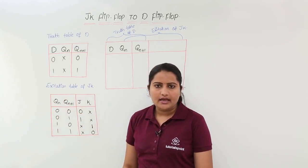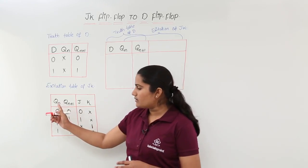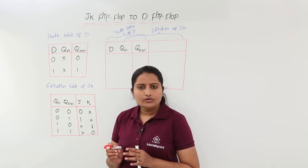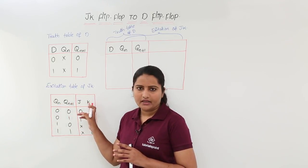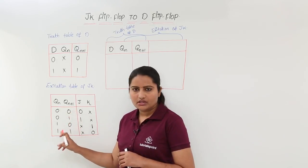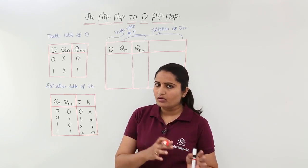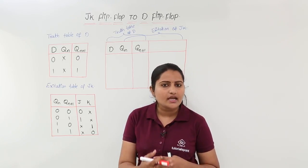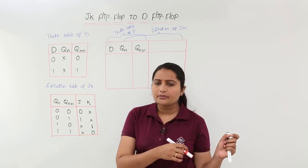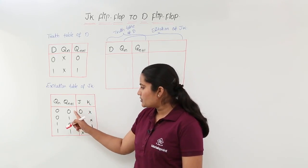Coming to the excitation table of JK — you consider the present state and next state. For any excitation table you will find present state and next state first, then input variables. The combination of present state and next state to consider is: 00, 01, 10, 11. I am giving a shortcut for better remembering, though it is always better to follow the full procedure already discussed.